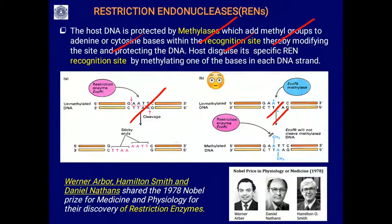Restriction endonucleases were studied, characterized, and purified by Werner Arber, Hamilton Smith, and Daniel Nathans, who shared the 1978 Nobel Prize in Medicine and Physiology for the discovery of restriction enzymes. They identified and characterized these restriction endonucleases.